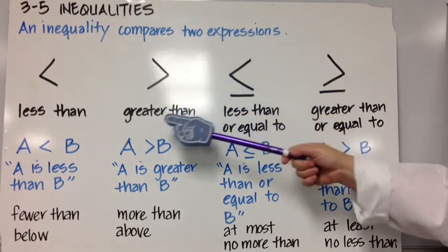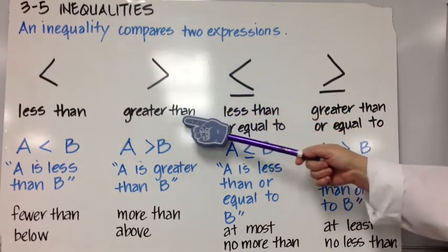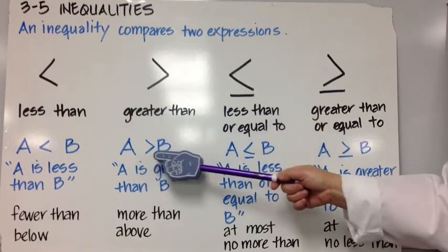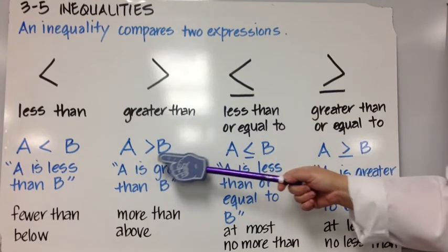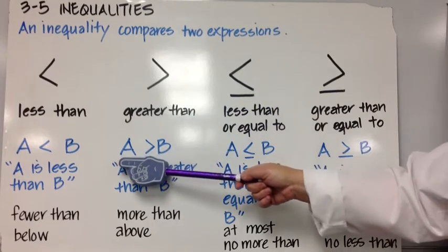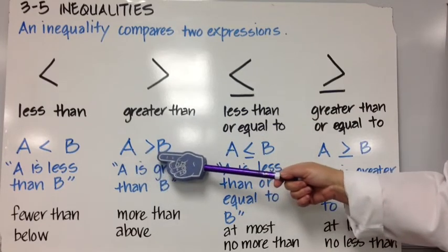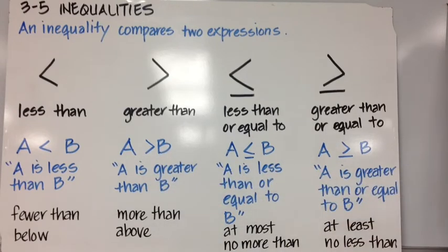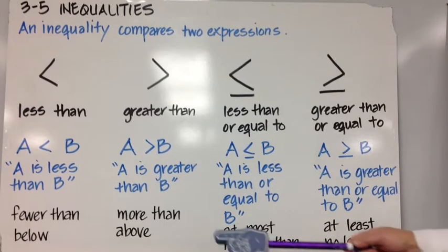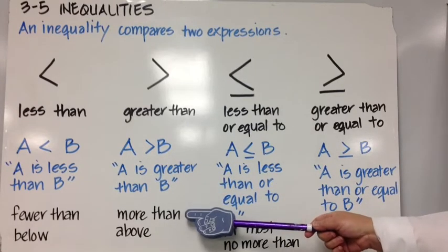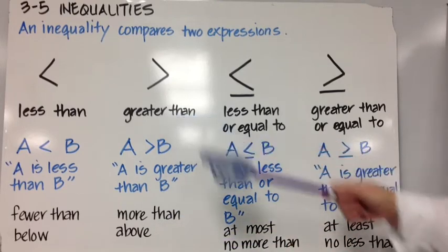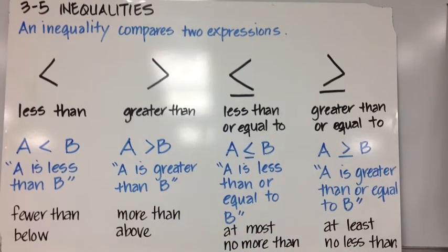Greater than. A is greater than B. Notice the positions of A and B in regards to the inequality symbol. We could also say 'more than' or 'above' for the symbol greater than.